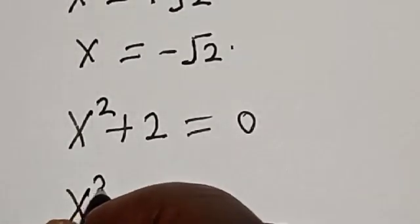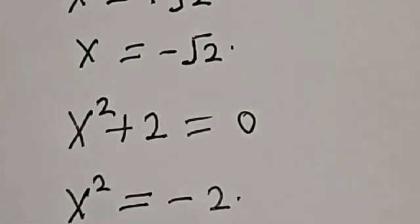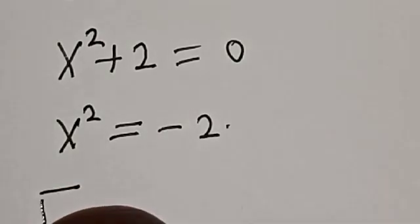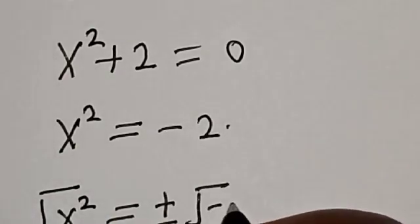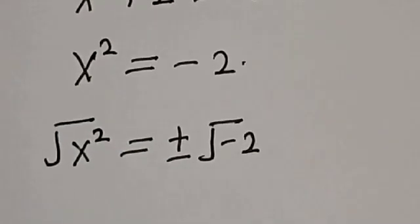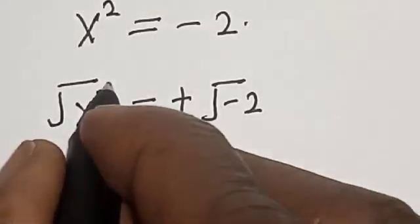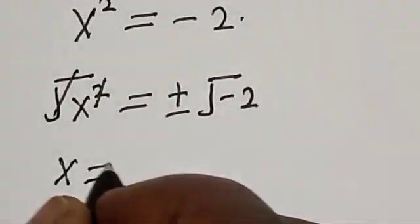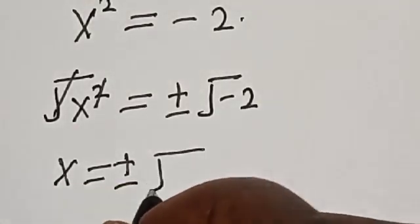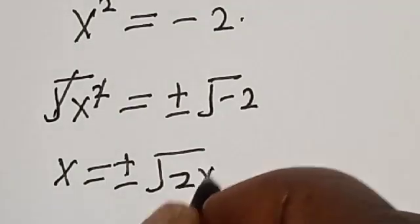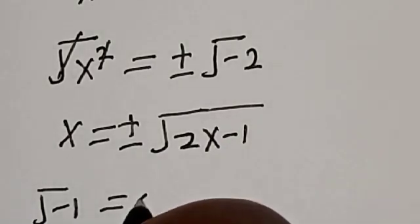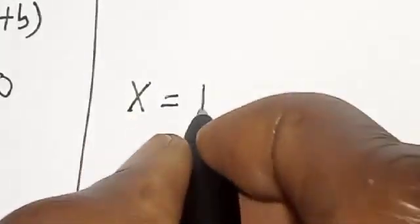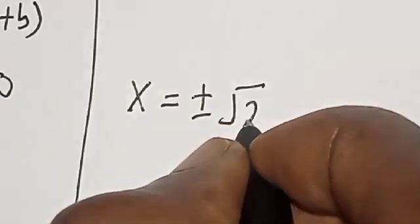x squared is equal to minus 2. Taking the square root of both sides, x is equal to plus or minus square root of minus 2, which is plus or minus square root of 2 multiplied by square root of minus 1. Since square root of minus 1 is equal to i, x is equal to plus or minus root 2 times i.